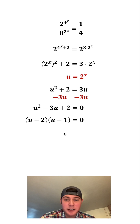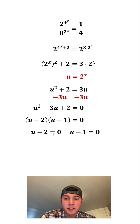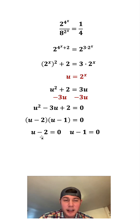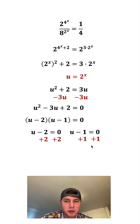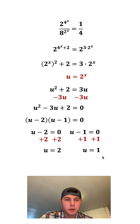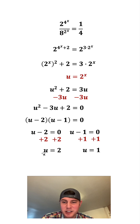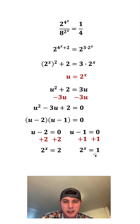And the reason we did that is because now we can set each of these equal to 0. So either u minus 2 equals 0, or u minus 1 equals 0. Adding 2 to both sides or adding 1 to both sides, we get u is equal to 2, or u is equal to 1. And u is equal to 2 to the x, so we can substitute 2 to the x in for each u.